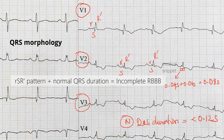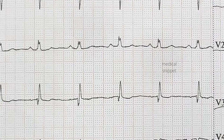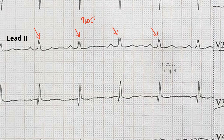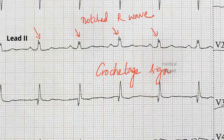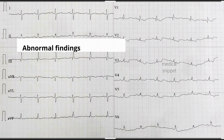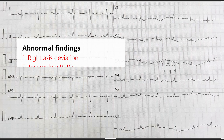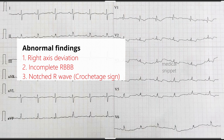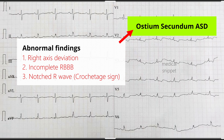One more abnormality seen in this ECG is notching of the R wave in lead 2. So let's summarize the abnormal findings: first is right axis deviation, second is incomplete right bundle branch block, and third is the notched R wave in lead 2. These findings point towards the diagnosis of ostium secundum atrial septal defect.